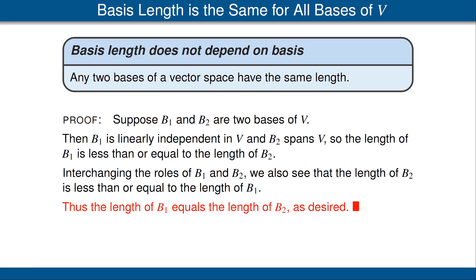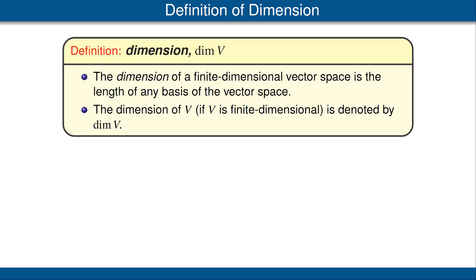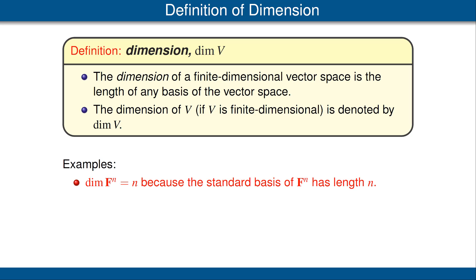Now we can define the dimension of a finite dimensional vector space to be the length of any basis of the vector space. It does not matter which basis we use, because we have just proved that all bases have the same length. We denote the dimension of a finite dimensional vector space V by dim V. The dimension of Fⁿ equals n, because the standard basis of Fⁿ has length n — this works out as expected.